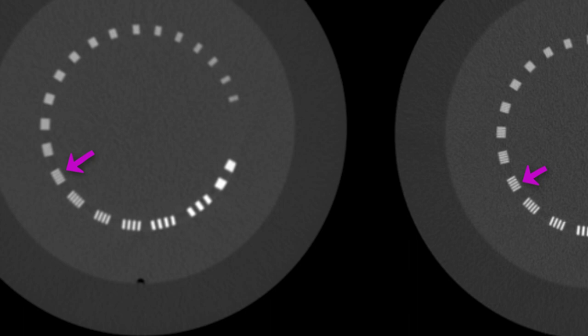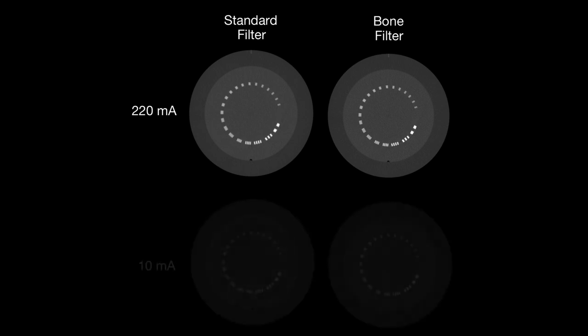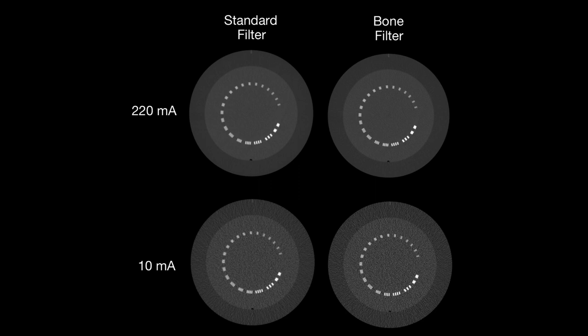This might seem like a subtle difference, but when you're talking about high resolution imaging needed in some applications, this is important. The images I just showed were taken at 220 mA. If I turn mA down, you'll see the noise increases — but actually the spatial resolution is not really affected. So those two things are kind of decoupled: mA affects noise but not spatial resolution, which is more affected by those other factors.